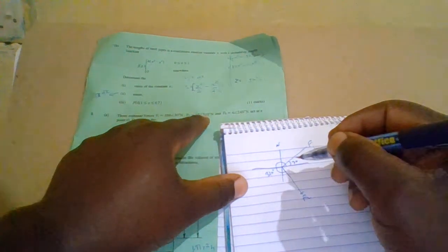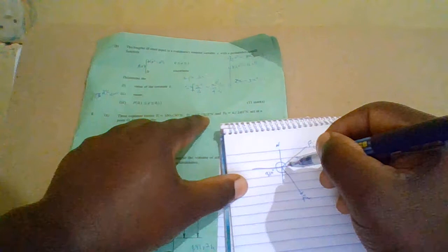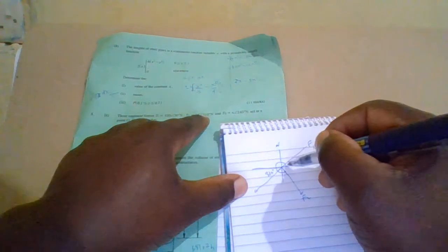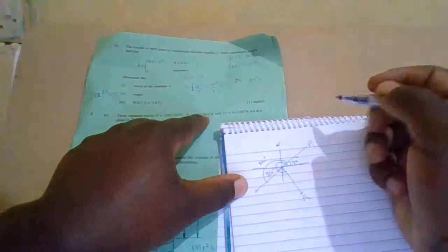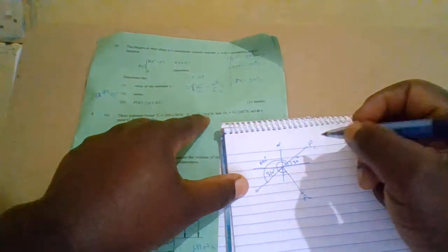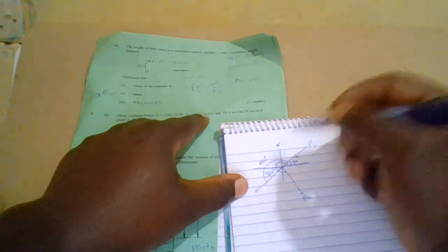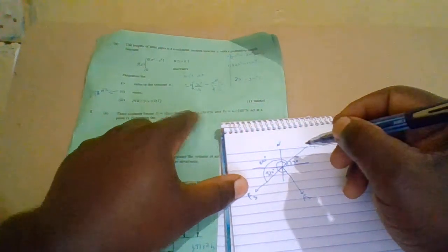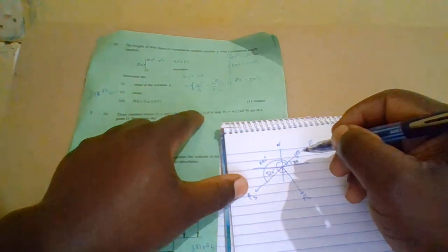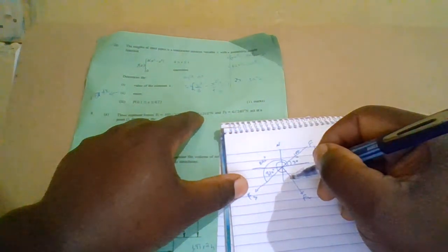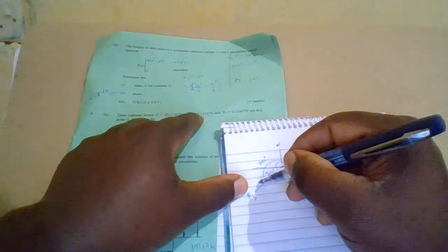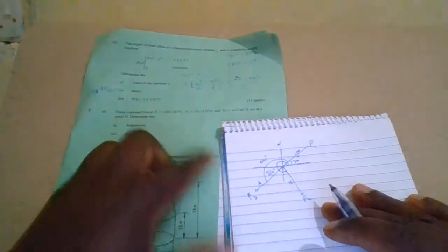And then we have F3. This is 100, F2 is 15, and then this is F3 is 4.